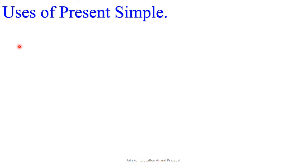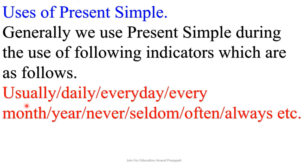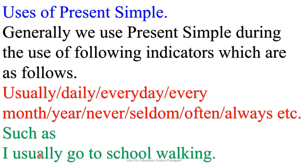Now we shall discuss the usage of the kinds of present tense. First, the usage of present simple. Generally, we use present simple with the following time indicators: usually, daily, every day, every month, every year, never, seldom, often, always, etc. For example, 'I usually go to school walking.' Here the indicator 'usually' is used, therefore present simple tense is used.